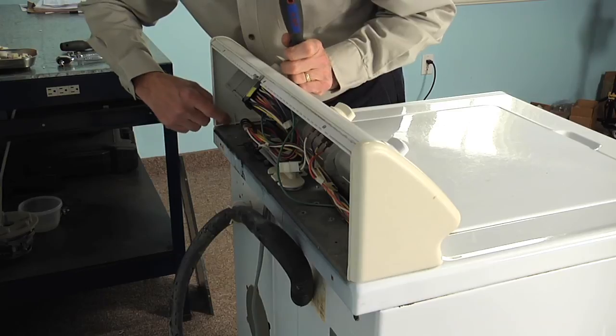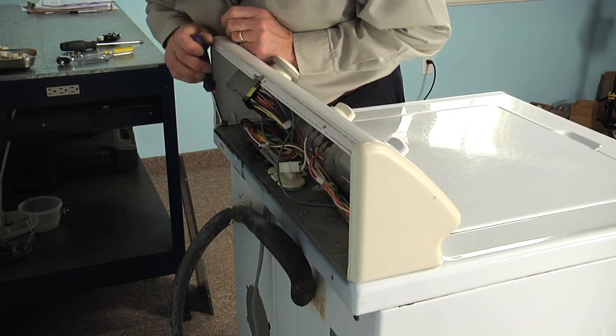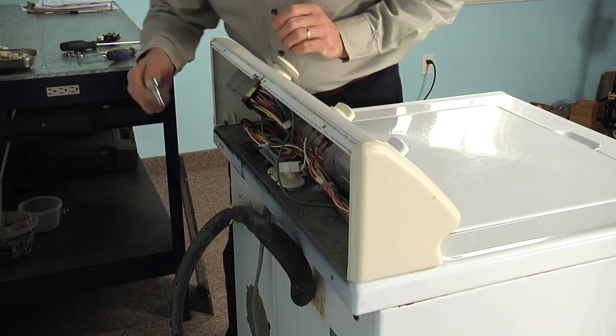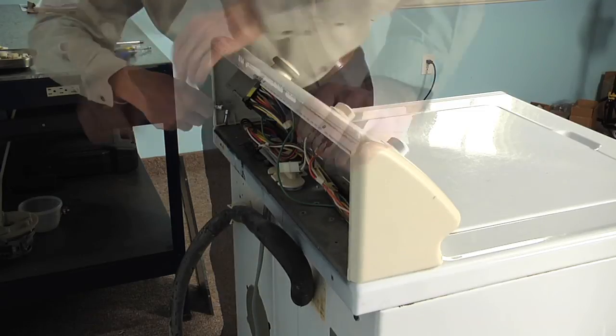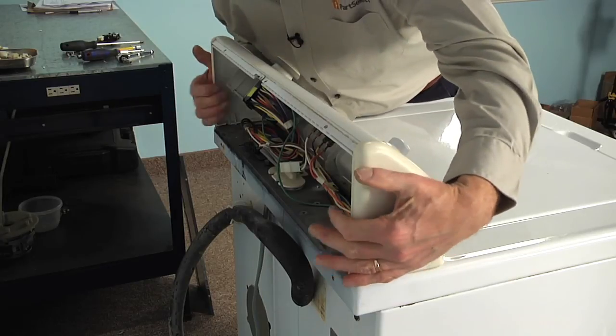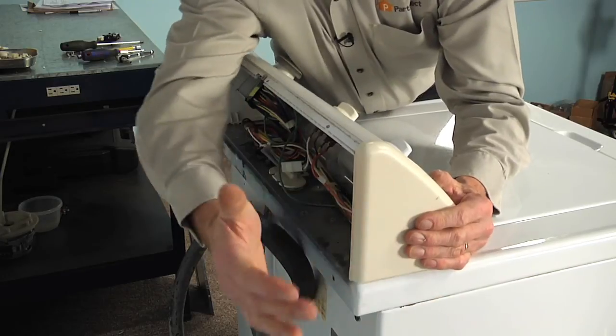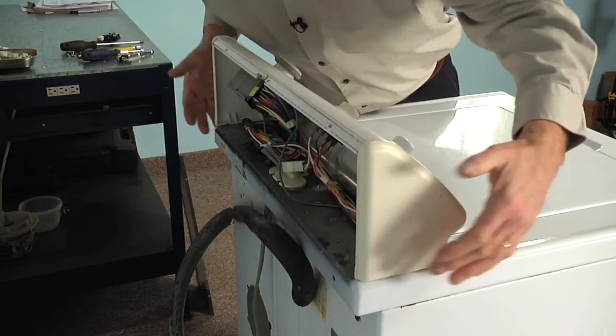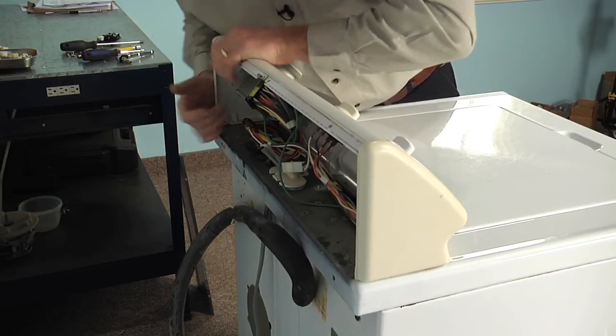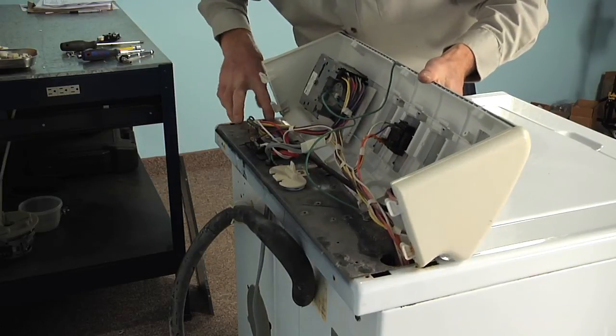Now next, we'll need to remove two more quarter-inch hex head screws that hold the console to the main top. If your nut driver is a little bit too long for that, we can use the quarter-inch ratchet. Now with those two screws removed, we can grasp that console and just give it a sharp pull forward, maybe a little bump if you need to, and that will release the catches on the bottom.